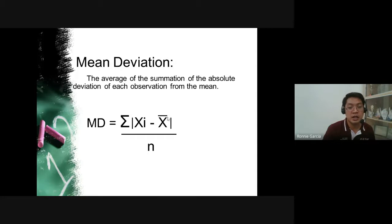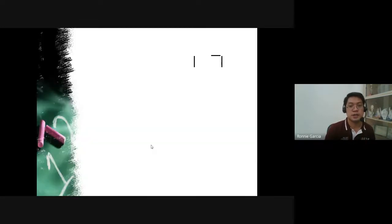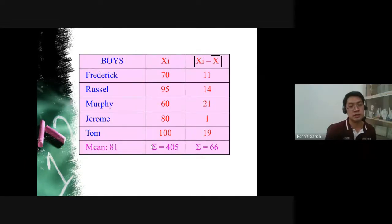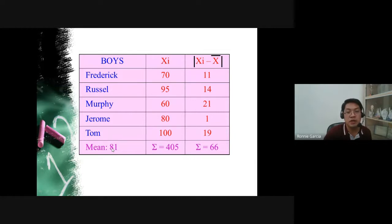For the boys, first get the mean: (70 + 95 + 60 + 80 + 100) / 5 = 405 / 5 = 81. Then compute each absolute deviation from the mean: |70−81| = 11, |95−81| = 14, |60−81| = 21, |80−81| = 1, |100−81| = 19. Sum = 11 + 14 + 21 + 1 + 19 = 66. Mean deviation = 66 / 5 = 13.2.